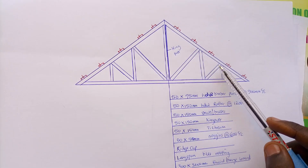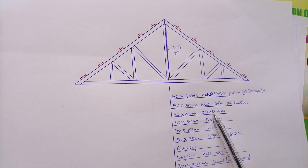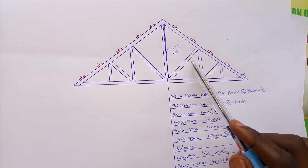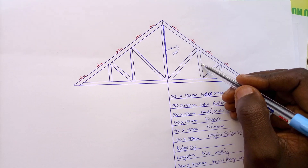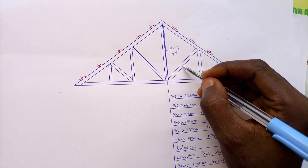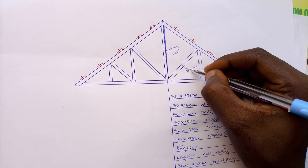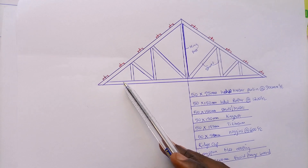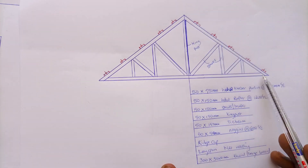The other elements we see here are called struts. We have a diagonal strut — also called a slanting strut — and a vertical strut. These are the two types of struts: they can be diagonal or vertical, but they are all called struts.